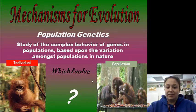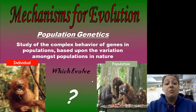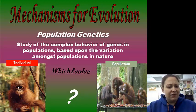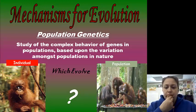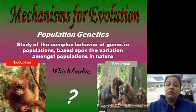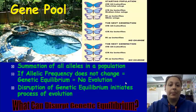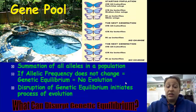Mechanisms for evolution: population genetics — the study of complex behaviors of genes in a population based on variation amongst populations in nature. One of the big things to remember is who actually evolves: it's the population that evolves, not just one single individual. For the gene pool — the summation of all the alleles in a population — if the allelic frequency does not change, then we're in genetic equilibrium and evolution is not occurring.